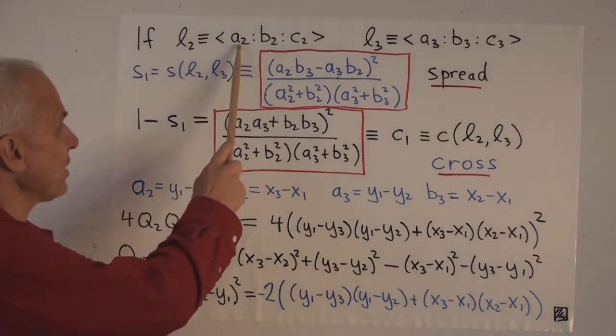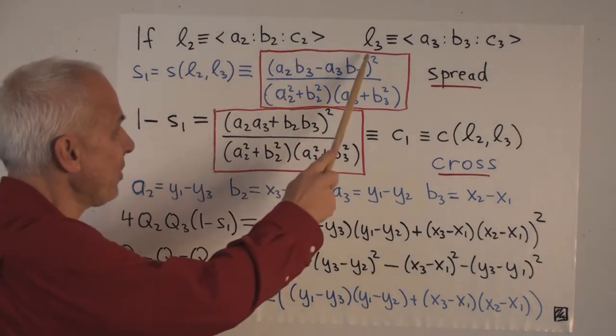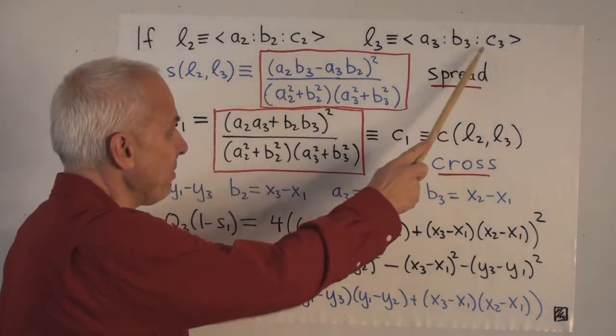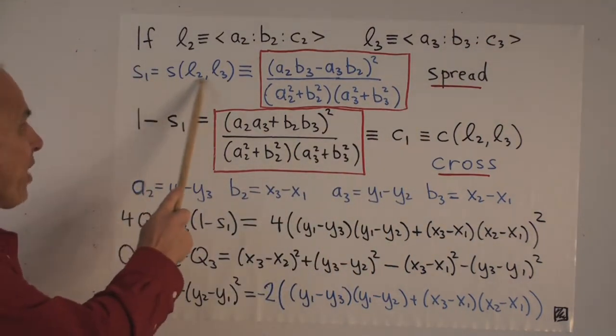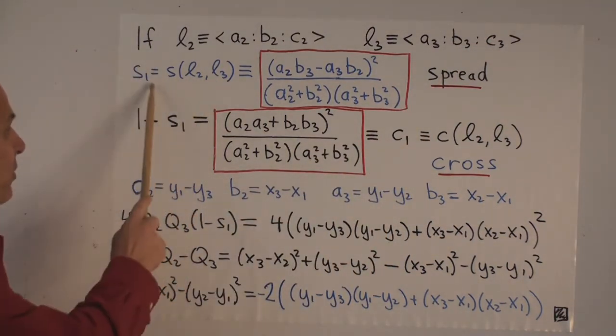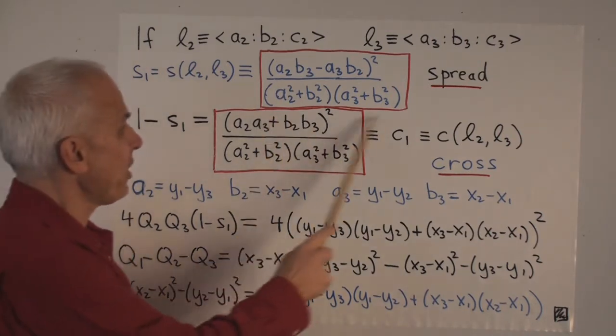If the line L2 has coordinates a2, b2, c2 and the line L3 has coordinates a3, b3, c3, then the formula for the spread between those two lines, which is what we're calling S1, is this quantity right here.